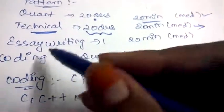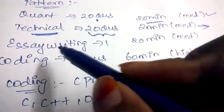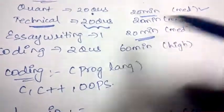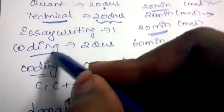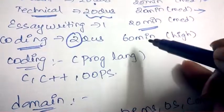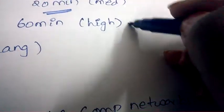You'll be given one essay writing and 20 minutes will be given. You'll also have coding, out of which they'll be asking you to solve two questions and 60 minutes will be given, whereas the level of difficulty will be very high.